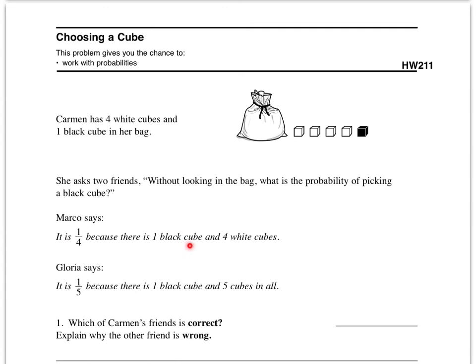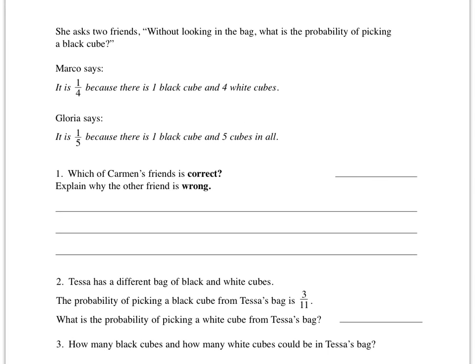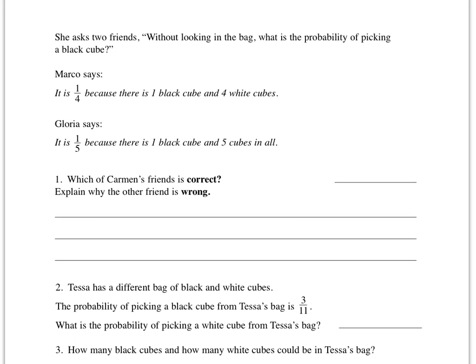She has two friends. Without looking in the bag, what is the probability of picking a black cube? Well there's one black cube. Marco says it's one out of four because there's one black cube and four white cubes. Gloria says it is one out of five because there's one black cube and five cubes in all. So based on our lesson today you should be able to pick out if Marco or Gloria is correct and then be able to also explain why the other friend is wrong. So try to explain that in your own words.